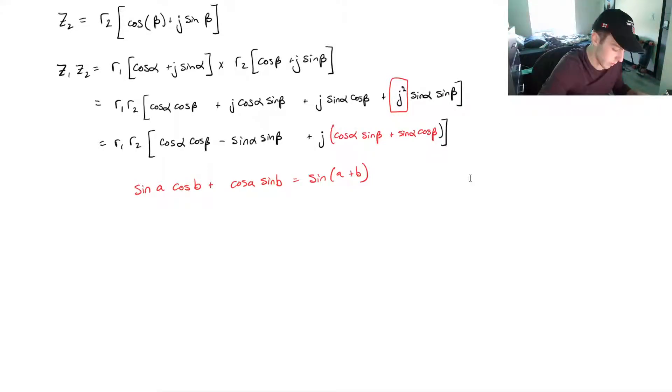And then, we've got one more. We know that cos of a times cos of b minus sin of a times sin of b. That can simplify to cos of a plus b.